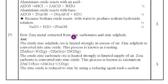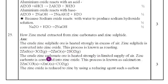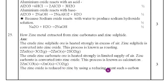Twenty-fifth question: how is zinc metal extracted from zinc carbonate and zinc sulphide? The crude zinc sulphide ore is heated strongly in excess of air — zinc sulphide is converted into zinc oxide through roasting. The crude zinc carbonate ore is heated strongly in a limited supply of air — zinc carbonate is converted into zinc oxide through calcination. The zinc oxide is then reduced to zinc by using a reducing agent such as carbon.